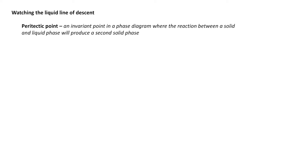Just as a reminder about what a peritectic point is: it's an invariant point in a phase diagram where the reaction between a solid and a liquid will produce a second solid phase. As that liquid reacts with a solid, the solid will deteriorate and a second solid phase will be produced.